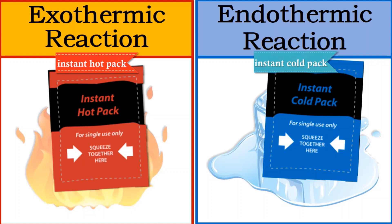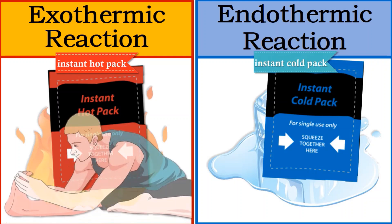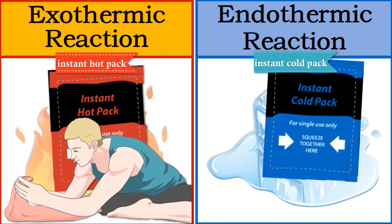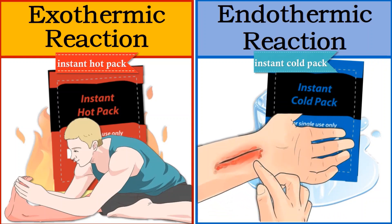Do you know exactly when to use instant hot packs and instant cold packs? Instant hot packs are used to relieve muscle cramps. The heat released increases the lumen size in the blood capillaries as well as the blood circulation rate. Instant cold packs can reduce the swelling of wounds. The heat absorbed by instant cold packs reduces the size of the lumen, so the rate of blood circulation is reduced and helps to stop bleeding.